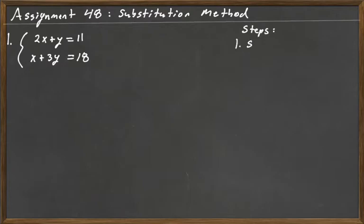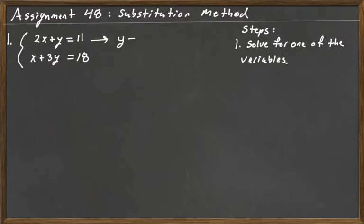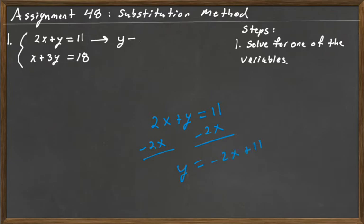So here we have a system of equations: 2x plus y is equal to 11, and x plus 3y is equal to 18. Step one, we're going to solve for one of the variables. I'm going to take the first equation, 2x plus y equals 11 — that's easy to solve for y. All you've got to do is subtract 2x, so you have y is equal to negative 2x plus 11.